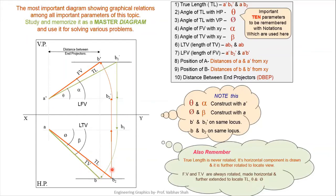Front view and top view are always rotated and made horizontal, then extended to locate true length, Phi and Theta. After rotating the top view, draw a vertical line and extend it to the locus to get the true length endpoint and true angle theta. Similarly, rotating the front view gives B2' and extending to cut the locus of B gives Phi and the true length. Just remember and memorize this master diagram — from this diagram we will solve all further problems.